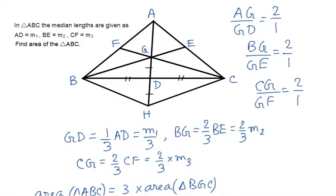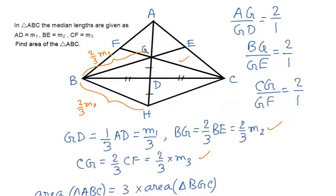Now looking at triangle BGH: the side length BG = (2/3)M2; the side BH equals CG, so BH = (2/3)M3; and GH equals 2 times GD from the construction, and GD = M1/3, so GH = (2/3)M1.